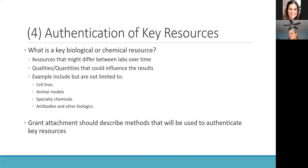The final aspect mentioned by the NIH is the authentication of key resources. A key biologic resource is any chemical or biologic resource — such as cell lines — that may differ between labs over time, with quantities and qualities that could influence results. The grant attachment should allow for a description of how we're going to authenticate our key resources. Addressing whether we're using animal models, cell lines, specialty chemicals, or biologics, we can describe how those are authenticated so that somebody could use the same reagent, cell line, or biologic to reproduce our results.